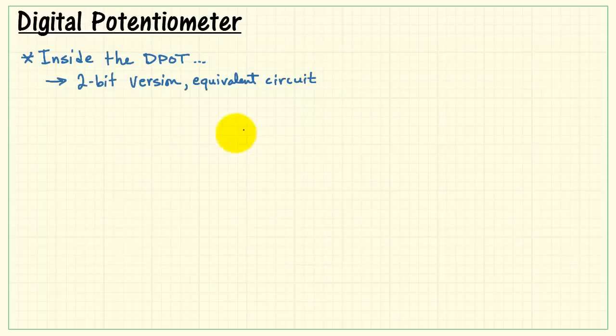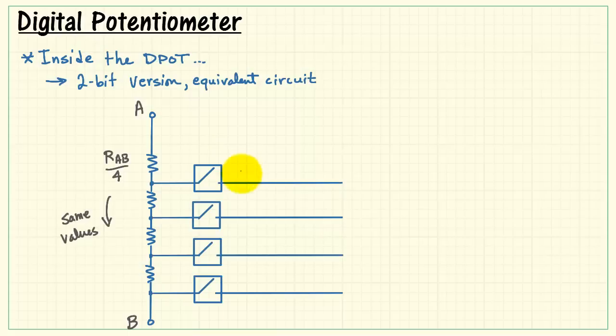Now let's take a look at the inside of the digital potentiometer to get a better handle on how this thing actually works. For this discussion, I'll be using a 2-bit version and giving you an equivalent circuit, then I'll show you how that scales up to the 8-bit version. Here I have four resistors, each a value of RAB divided by four. That is, the end-to-end terminal resistance is split up into four equal-valued resistors.